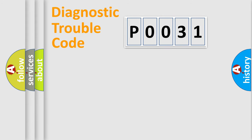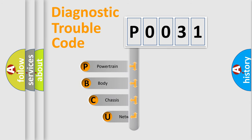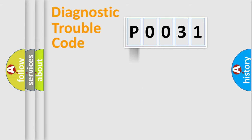First, let's look at the history of diagnostic fault code composition according to the OBD2 protocol, which is unified for all automakers since 2000. We divide the electric system of an automobile into four basic units: Powertrain, Body, Chassis, and Network.